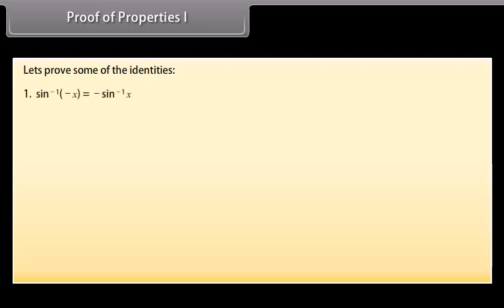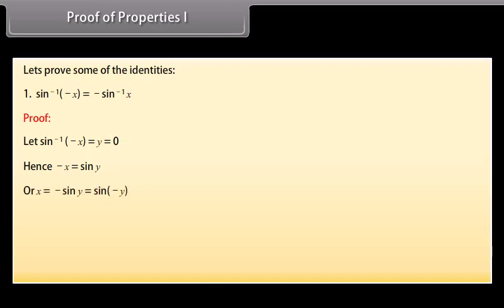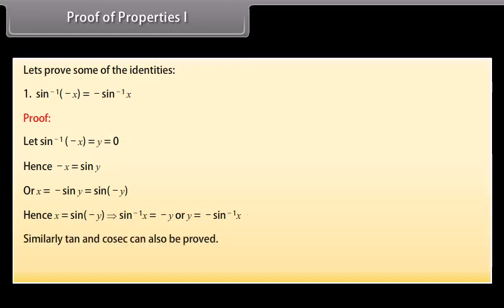Proof of Property 1: sin⁻¹(−x) = −sin⁻¹ x. Let sin⁻¹(−x) = y, so −x = sin y, meaning x = −sin y = sin(−y), hence sin⁻¹ x = −y, which implies sin⁻¹(−x) = −sin⁻¹ x. Similarly, tan and cosec can also be proved. For cos⁻¹(−x) = π − cos⁻¹ x, the proof follows analogously.